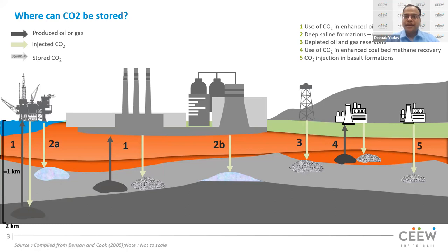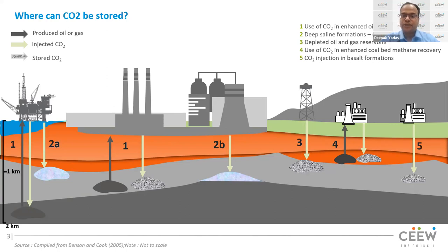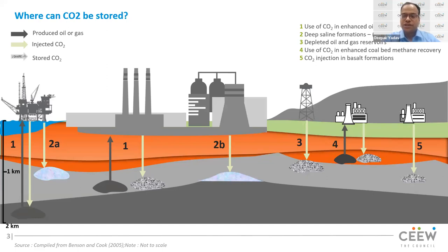Third, CO2 can also be stored in depleted oil and gas reservoirs. Fourth, just like enhanced oil recovery, CO2 can be used for enhanced coal-bed methane recovery — CO2 is put in underground reservoirs and coal-bed methane is produced at the output. The top four sequestration methods involve gaseous storage of CO2. However, there is a fifth method: CO2 injection in basalt formations, where CO2 reacts with alkali material underground and is converted into minerals — called mineralization. Unlike the other four, CO2 is converted into solid mineral form, significantly minimizing the risks associated with CO2 leakage.